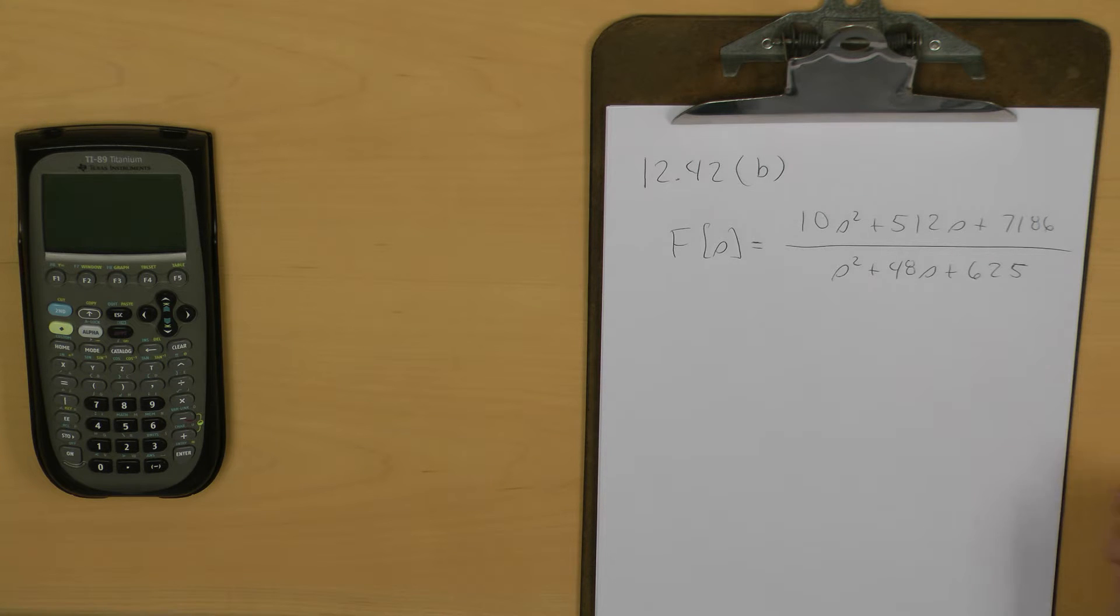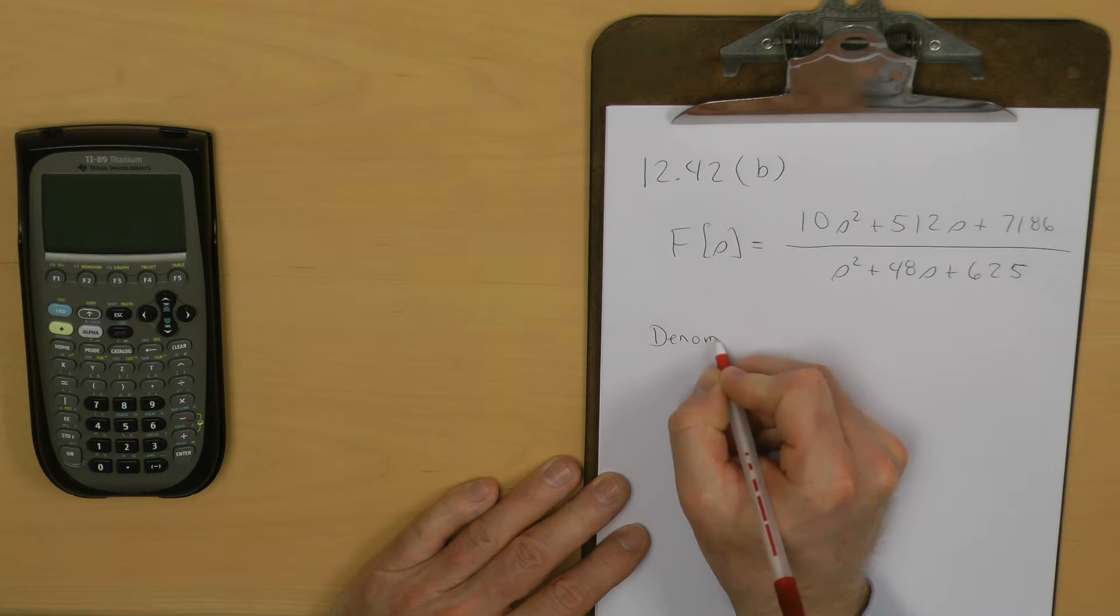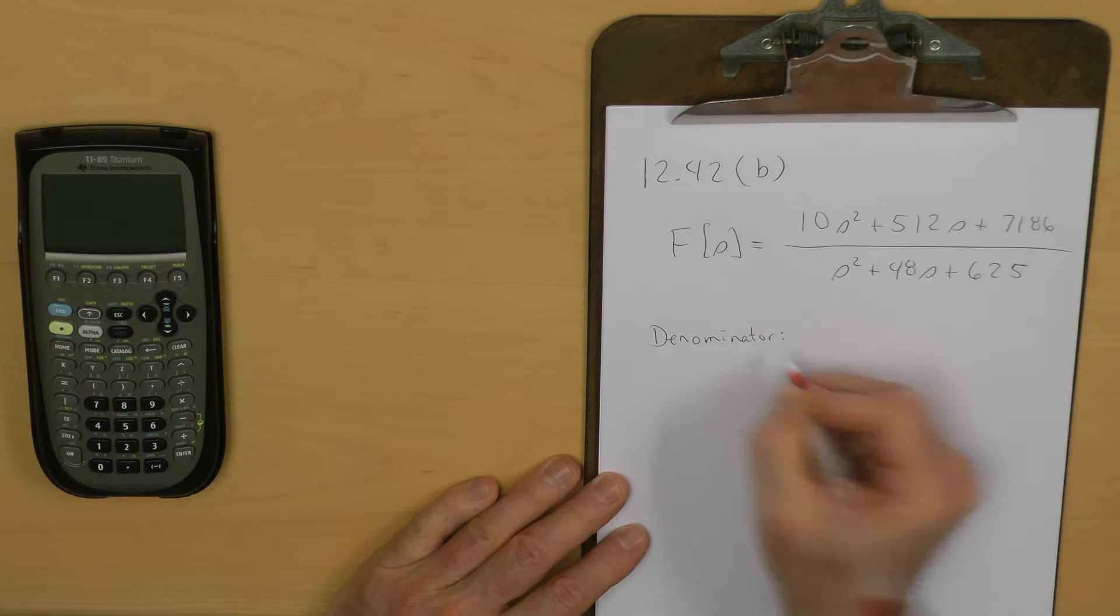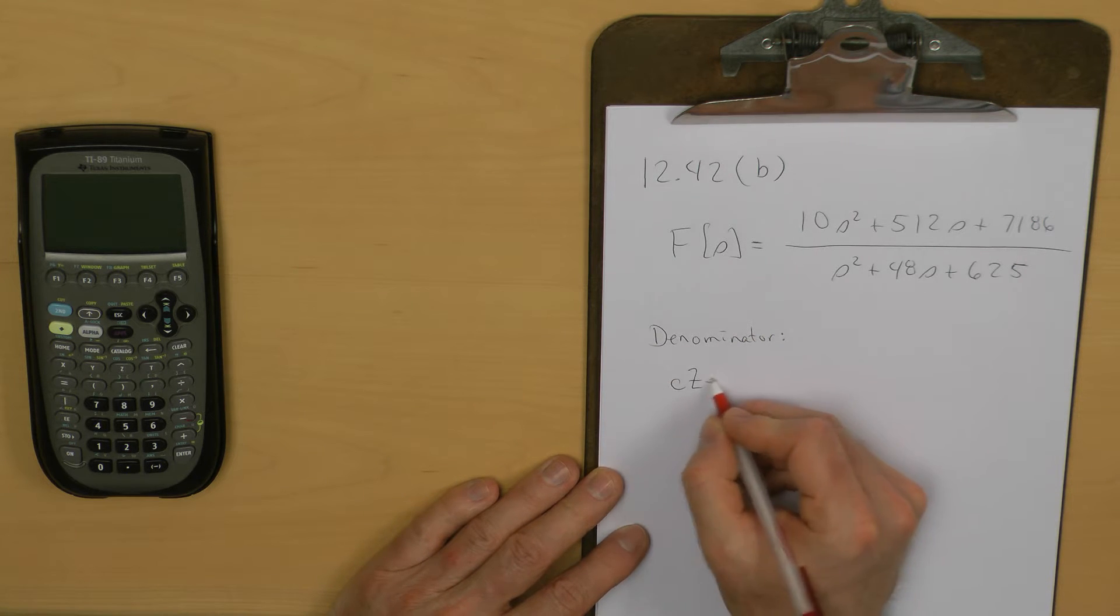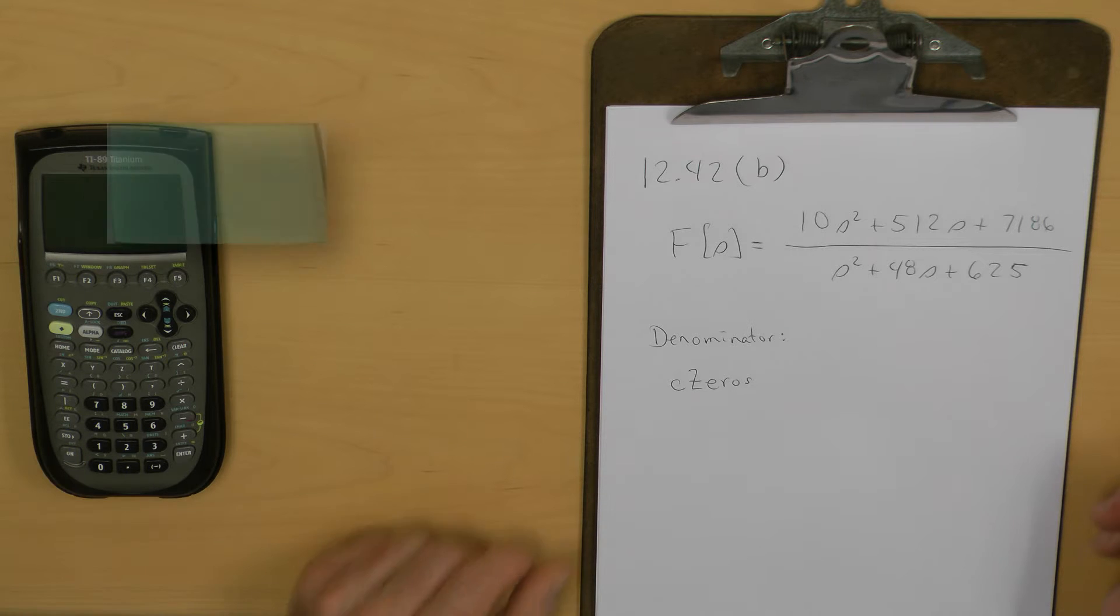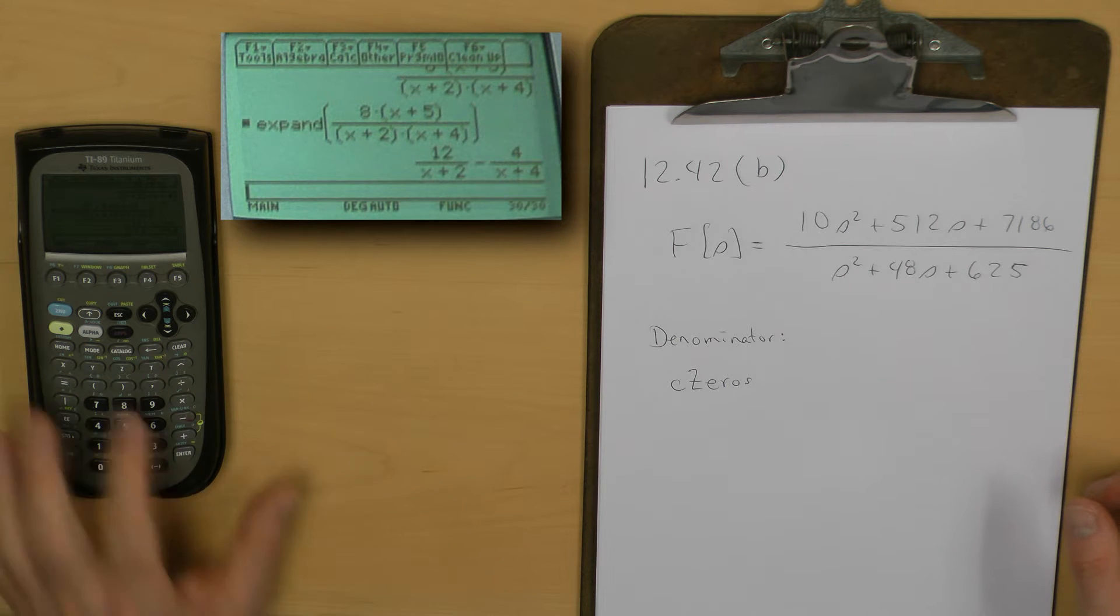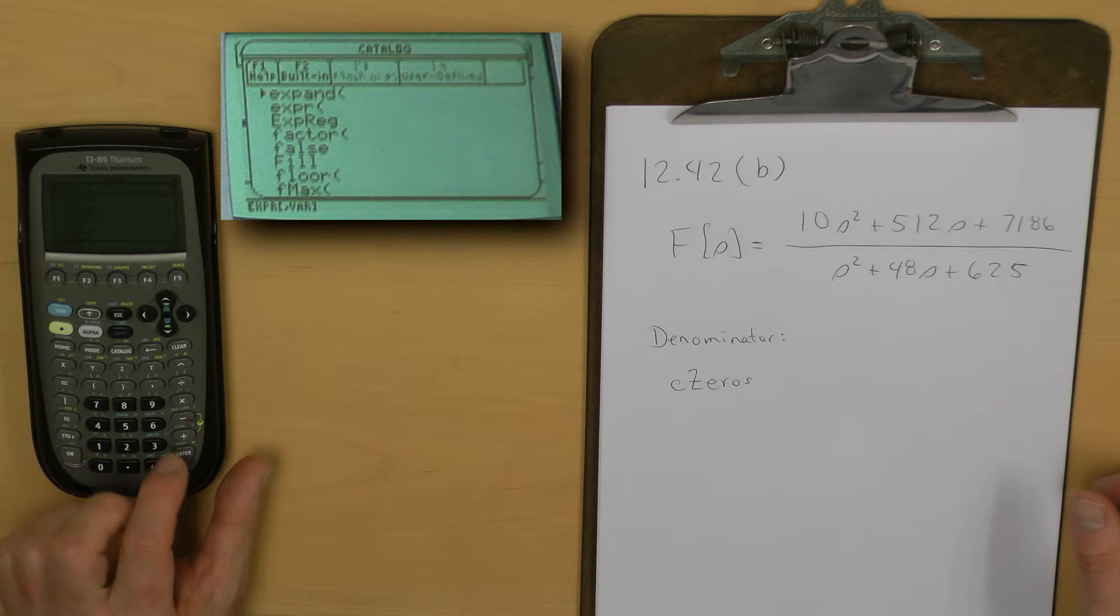To get started, let's let the calculator do the brute force work for us and identify what those roots are. If we look at the denominator as a polynomial, we can use the function in our calculator, C0s, for complex zeros. I'm going to turn on the calculator, get into the home screen, clear that last command line, and go into the catalog of functions. I'll hit the C button.